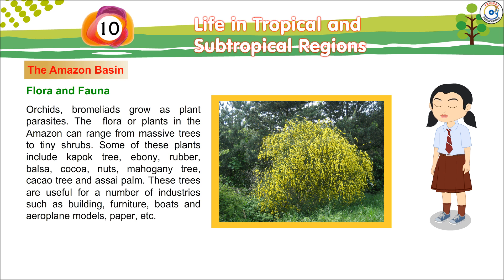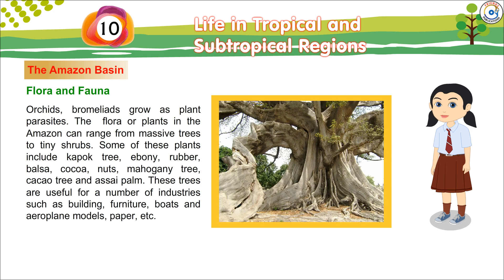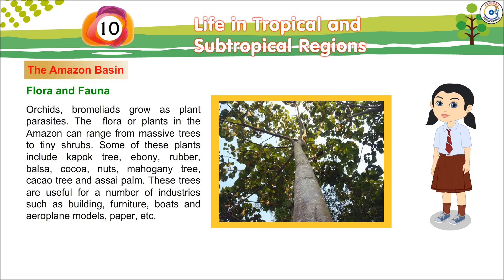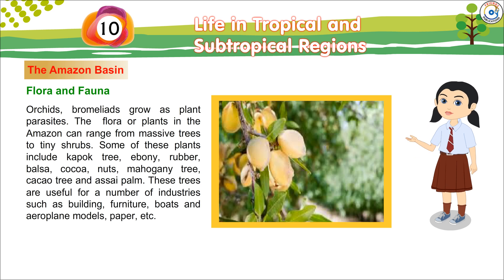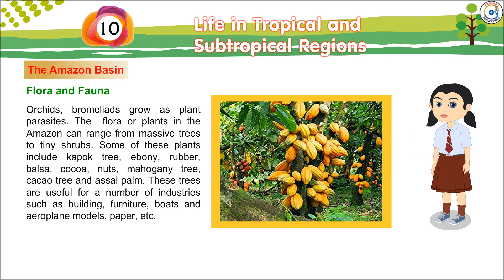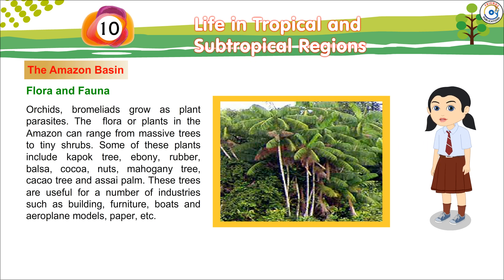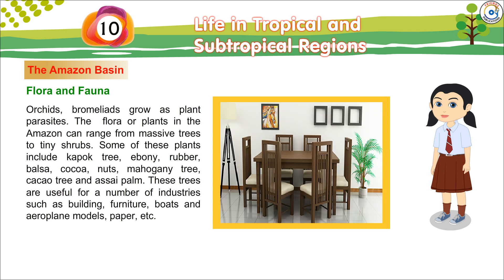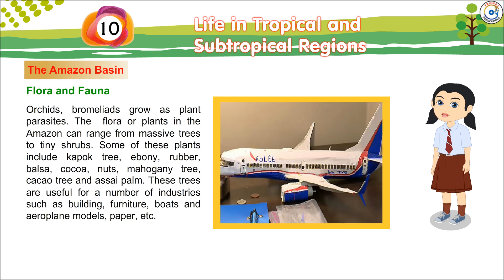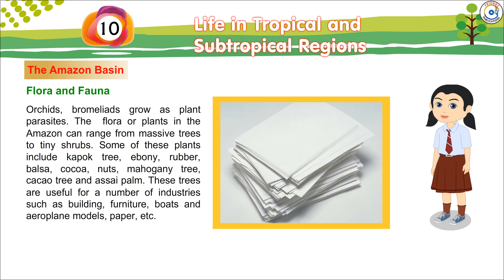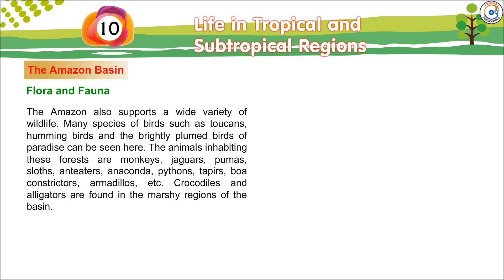Some of these plants include the kapok tree, ebony, rubber, balsa, coca, nuts, mahogany tree, cacao tree, and acai palm. These trees are useful for a number of industries such as building, furniture, boats and aeroplane models, and paper. The Amazon also supports a wide variety of wildlife.